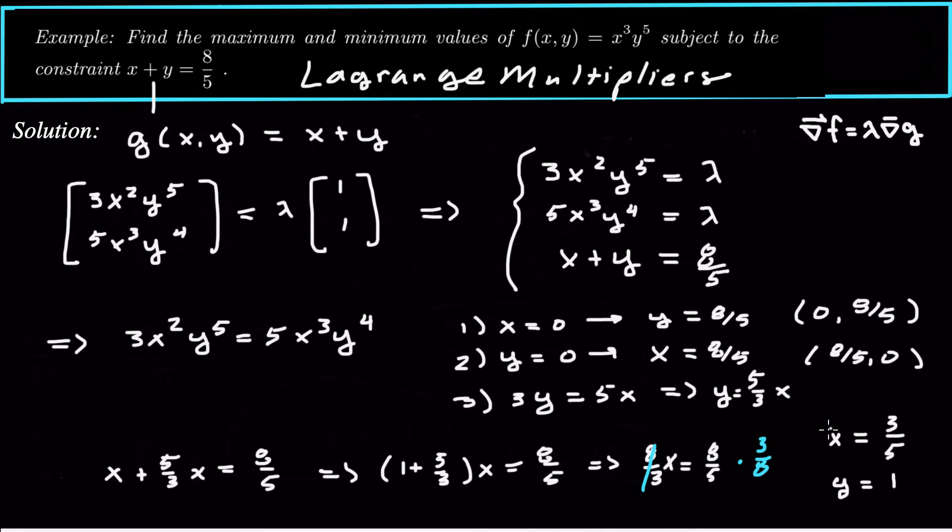So we have three critical points here. We have 0, 8 fifths, 8 fifths, 0, and then 3 fifths, comma 1. So these are our three critical points. So let me write that last one up here: 3 fifths, comma 1.